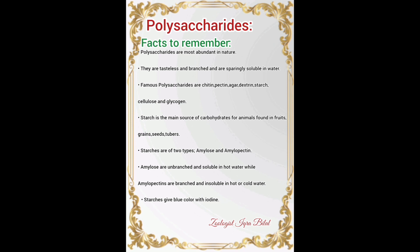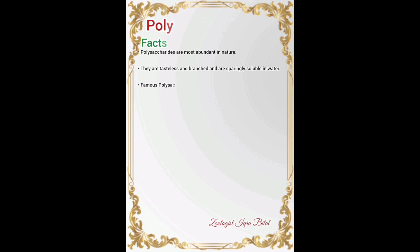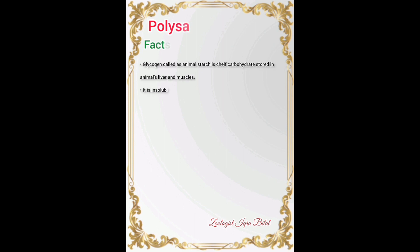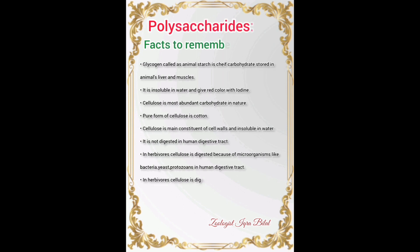Starches give a blue color with iodine — very important to note, as the colors of polysaccharides with iodine are frequently tested. Glycogen, called animal starch, is stored in animal bodies and is the chief carbohydrate stored in the liver and muscles. Glycogen is insoluble in water and gives a red color with iodine.